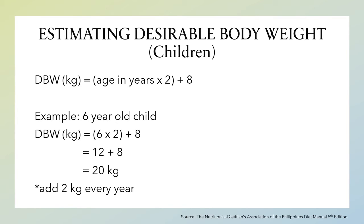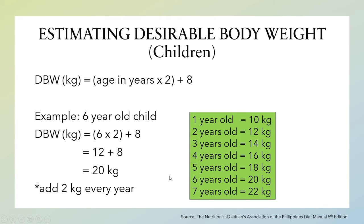The formula is also telling us to add 2 kilograms for every year of life. So if the child turns 7, the 20-kilogram ideal body weight will become 22 kilograms. If you compute using the formula, you will end up with the values shown in the following table.